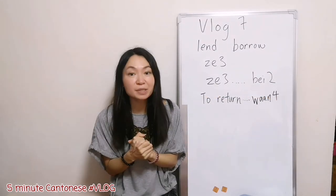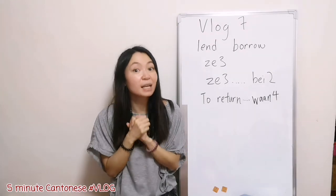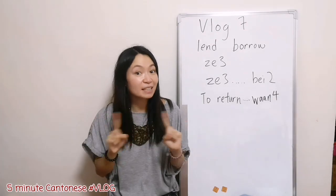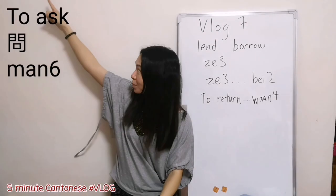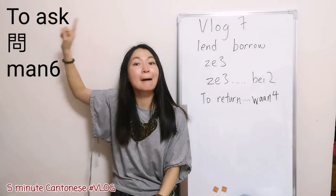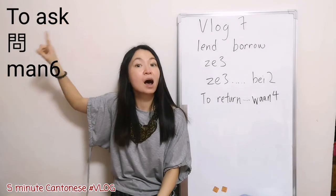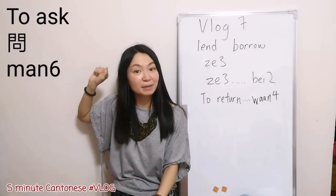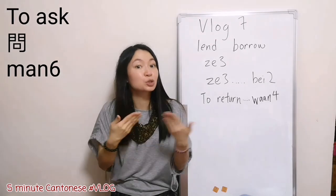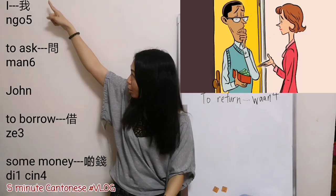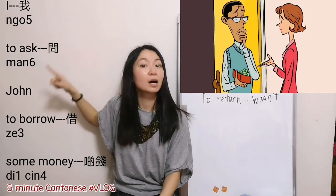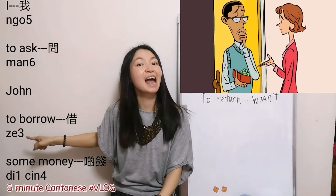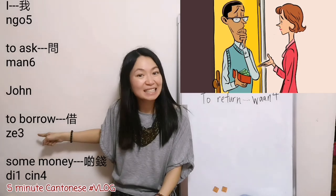How about to borrow something from someone? Again, Cantonese don't say it this way. We need another verb: to ask. 問. For example, I ask John to borrow some money. 我, to ask, 問, John, to borrow some money, 借.